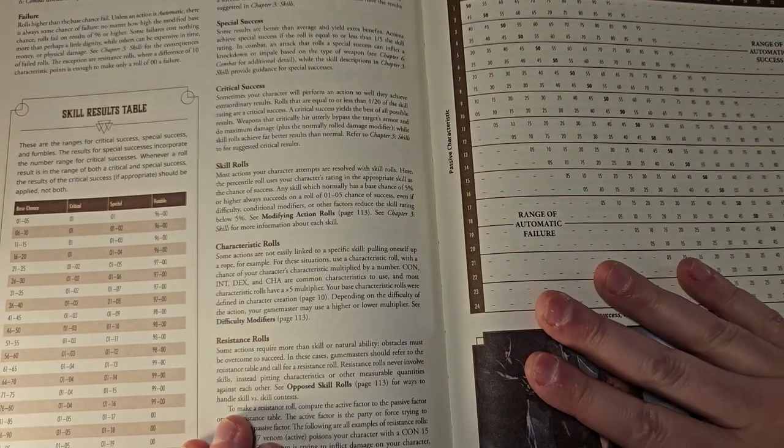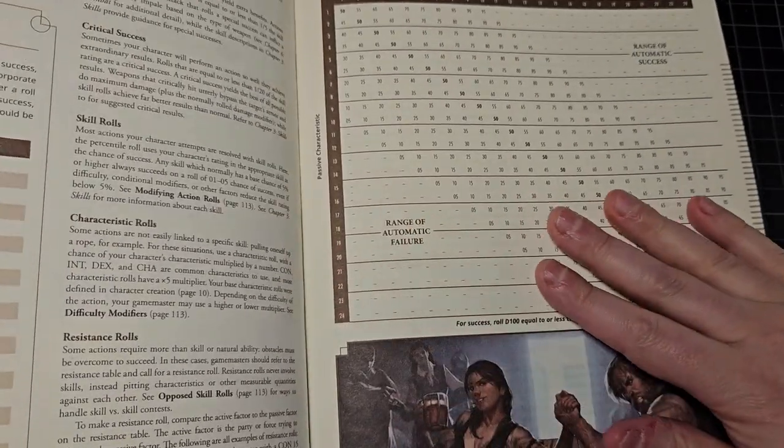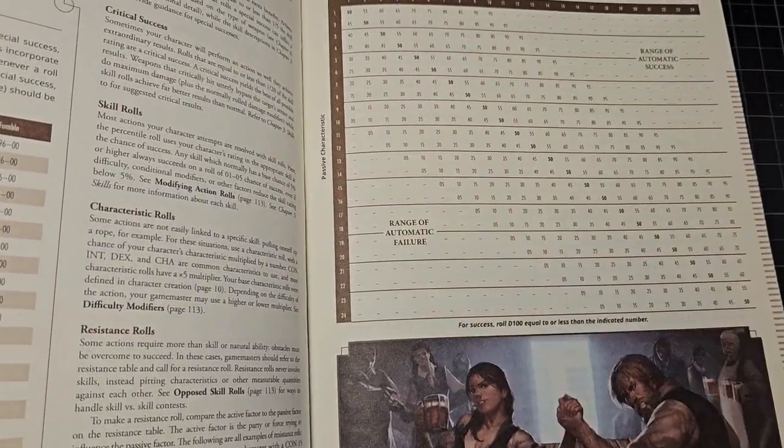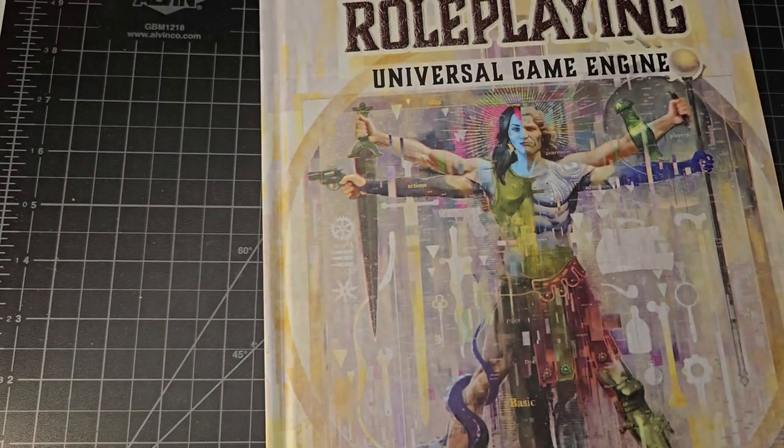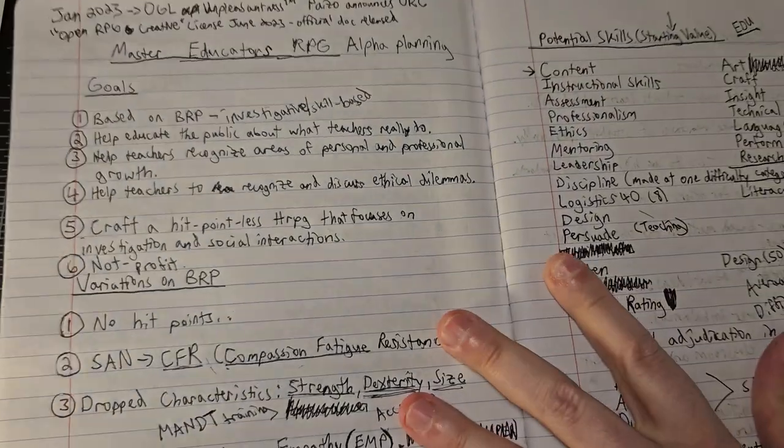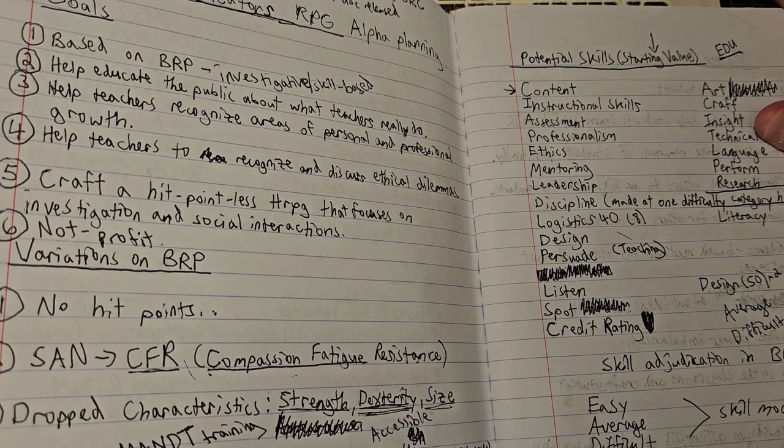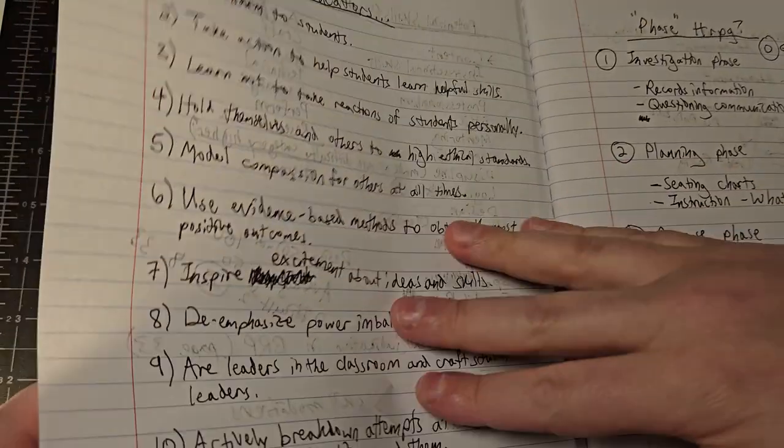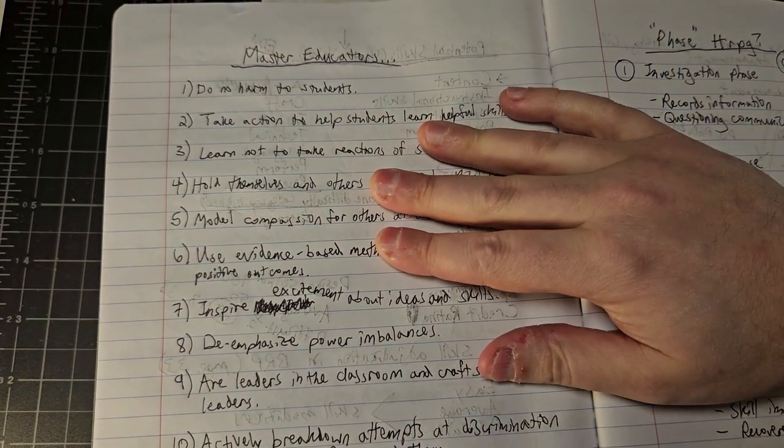The resistance table is back in this version of BRP. We wouldn't have to use the resistance table for opposed rolls. I think opposed rolls would work really well for a Master Educators role-playing game, because a lot of what happens in schools is educators trying to reach students who don't necessarily want to be reached because they're young. A lot of patience is required.